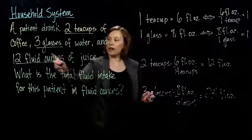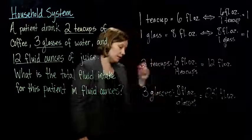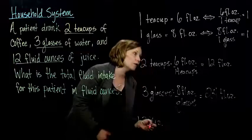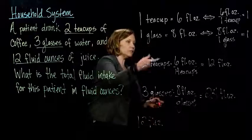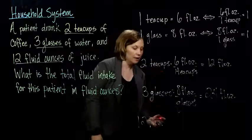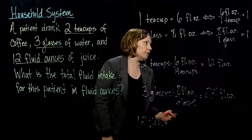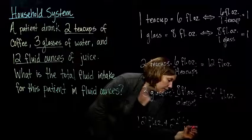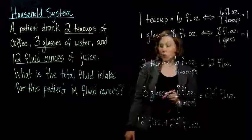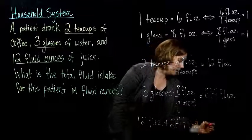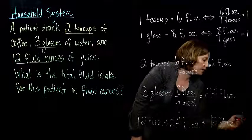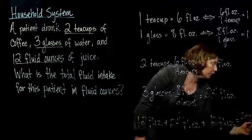So, and then I have 12 fluid ounces left. So, I have 12 fluid ounces from my two teacups of coffee and then I also have 24 fluid ounces from my three glasses of whatever it was, water. And then I have 12 more fluid ounces of juice, right? And I add that up I get 48 fluid ounces.